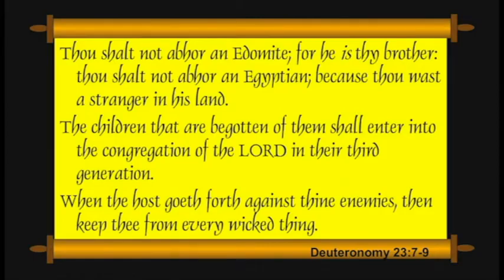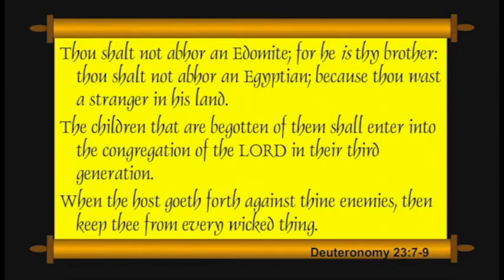Here's a different situation: 'Thou shalt not abhor an Edomite.' In the case of the Edomites and Egyptians, they were not abhorred in the same way. 'Thou shalt not abhor an Egyptian, because thou wast a stranger in his land. The children begotten of them shall enter into the congregation of the Lord in their third generation.' The Edomites had kinship with Abraham, and in the Egyptians' case, hospitality was shown to Abraham and Jacob's family during famine in Genesis 12 and chapters 42 through 47. God gives them consideration because they extended hospitality in earlier years, prior to the Pharaoh that knew not Joseph.